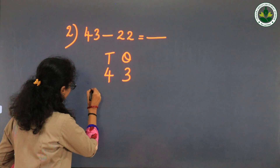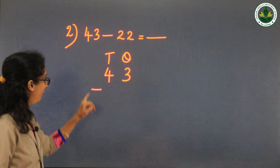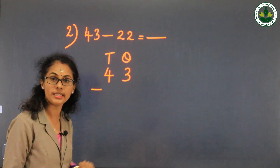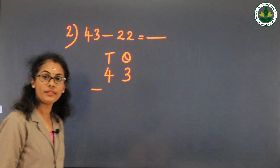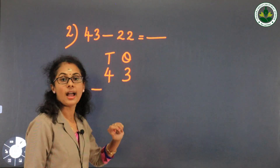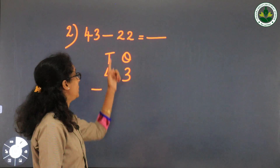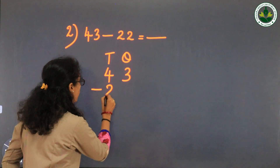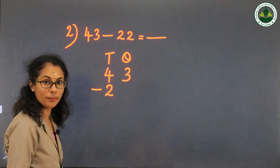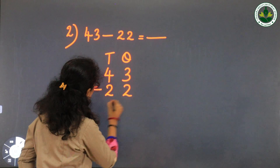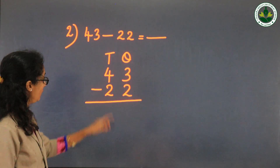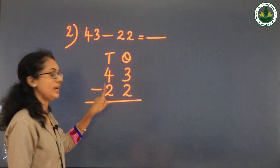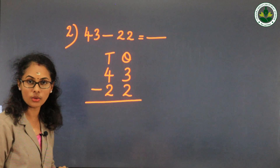43 minus 22. First subtract the digits in the ones column: 3 minus 2. Check: 2 plus 1 equal to 3, so 3 minus 2 equals 1. Write that 1 in the ones column.